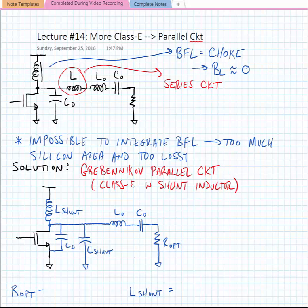So if we look at this, our shunt circuit consists of this shunt inductor and shunt capacitor, and we can embed the parasitic capacitance from the drain into this shunt capacitor, and we still have our series resonant circuit comprised of L0 and C0.